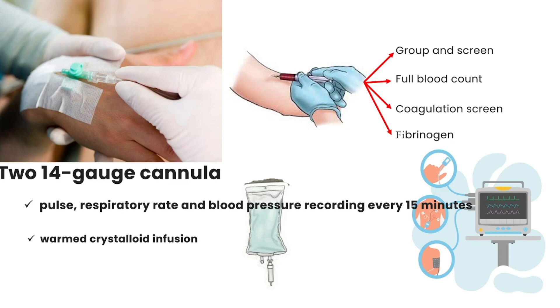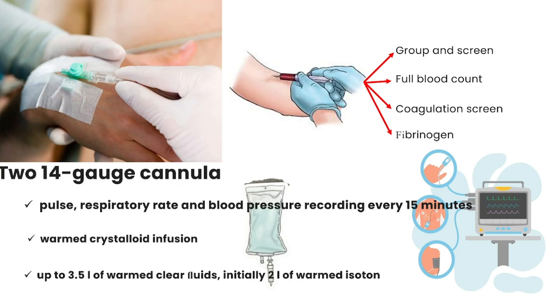Until blood is available, infuse up to 3.5 liters of warmed clear fluids, initially 2 liters of warmed isotonic crystalloid. Further fluid resuscitation can continue with additional isotonic crystalloid or colloid.